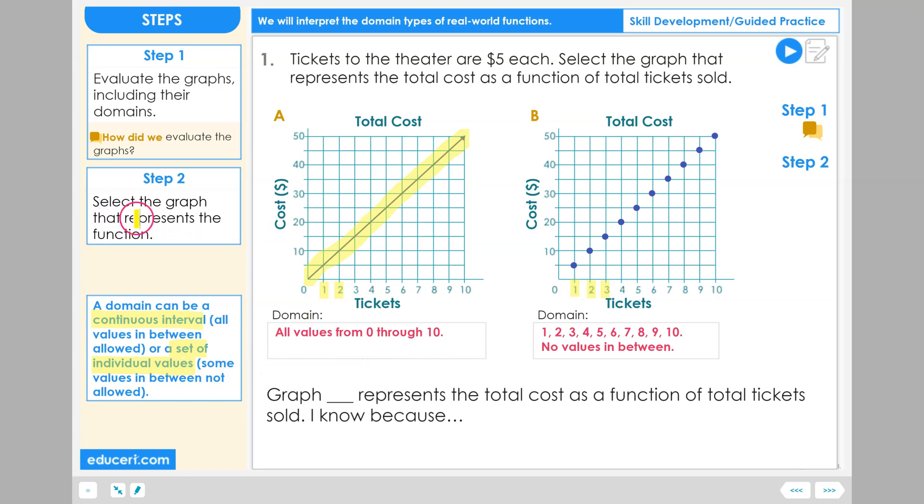Step 2. Select the graph that represents the function. Using what I know about the real world context, tickets being sold are going to be sold in whole number quantities only like 1, 2, and 3.